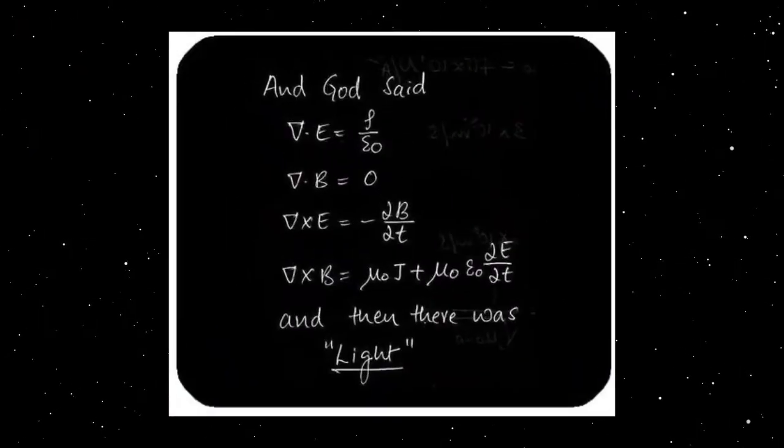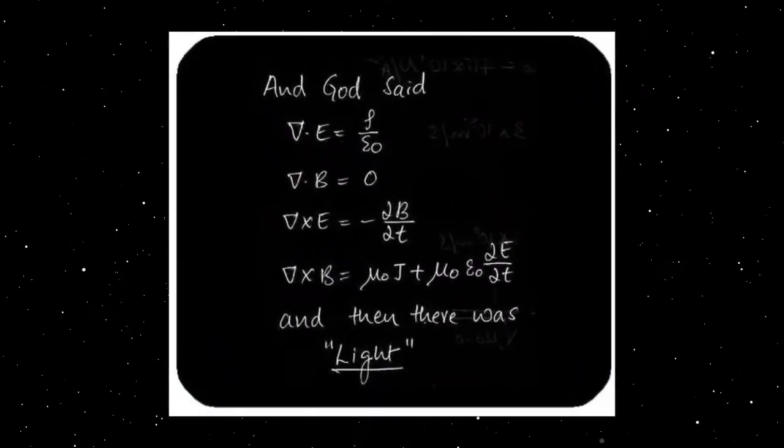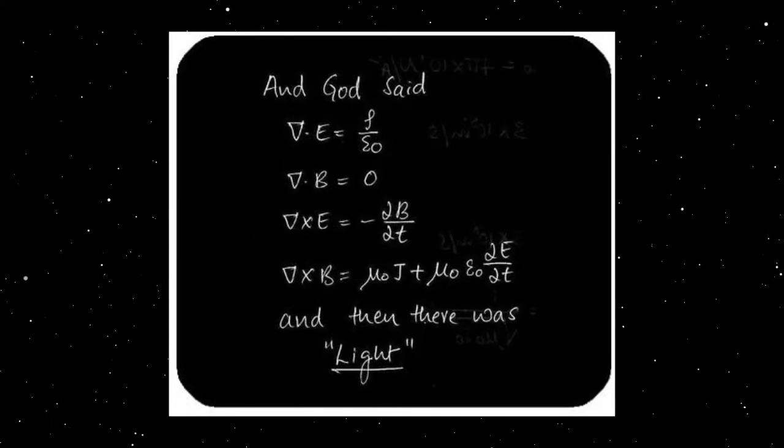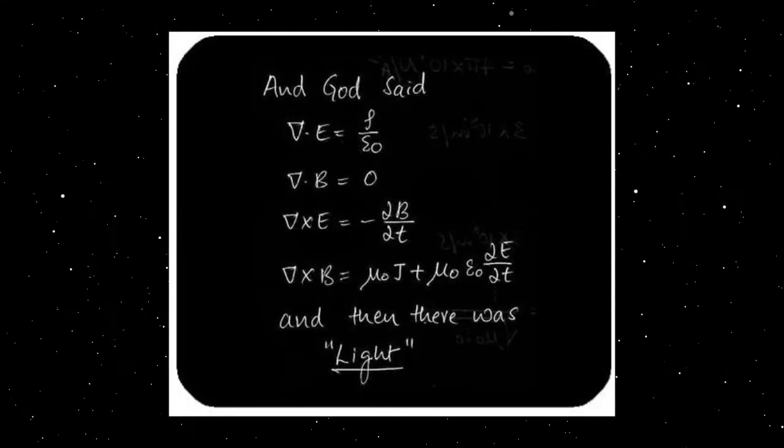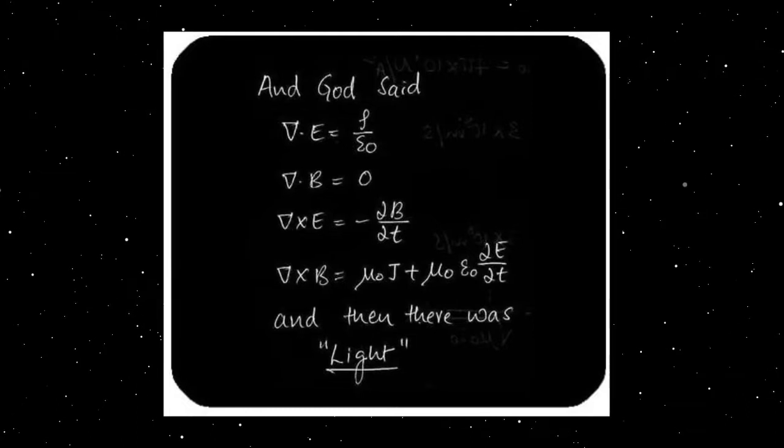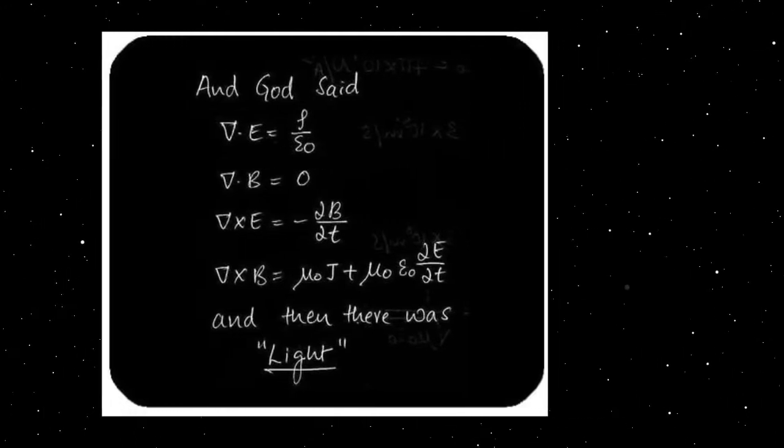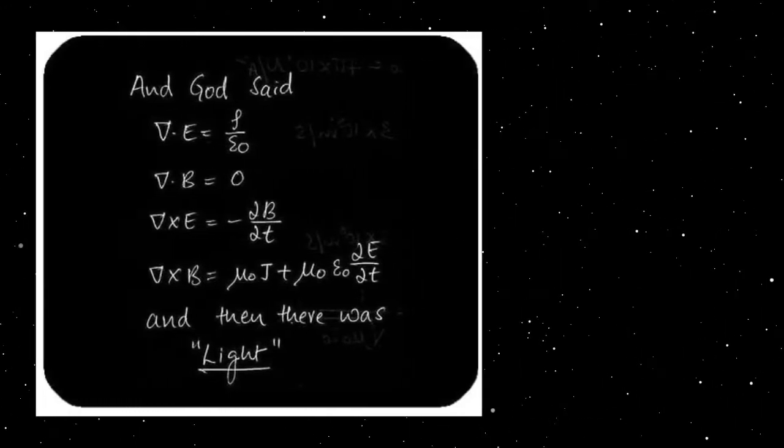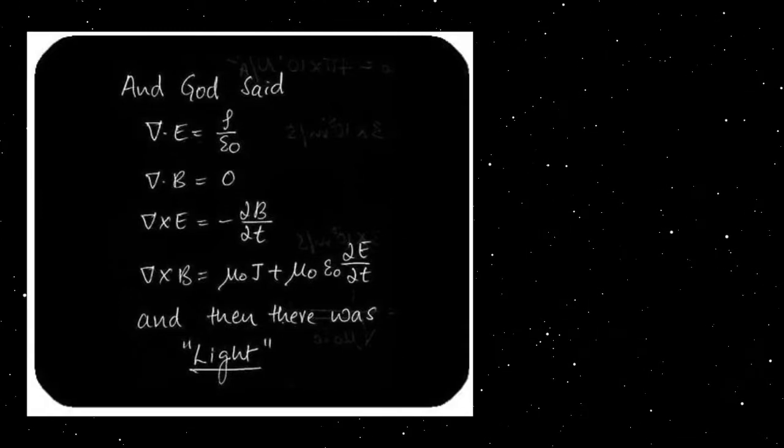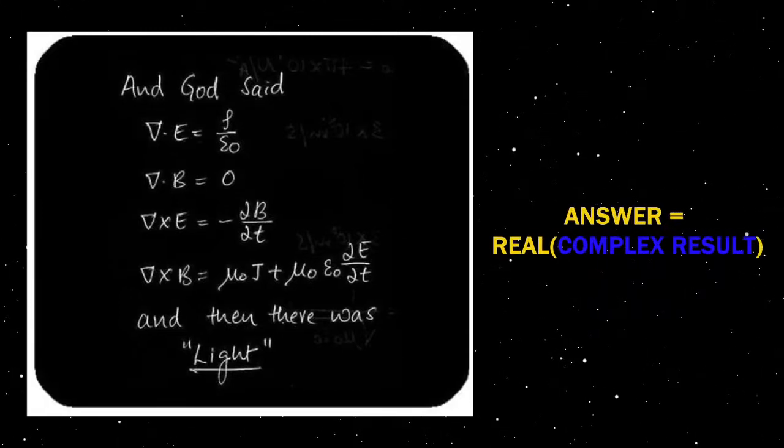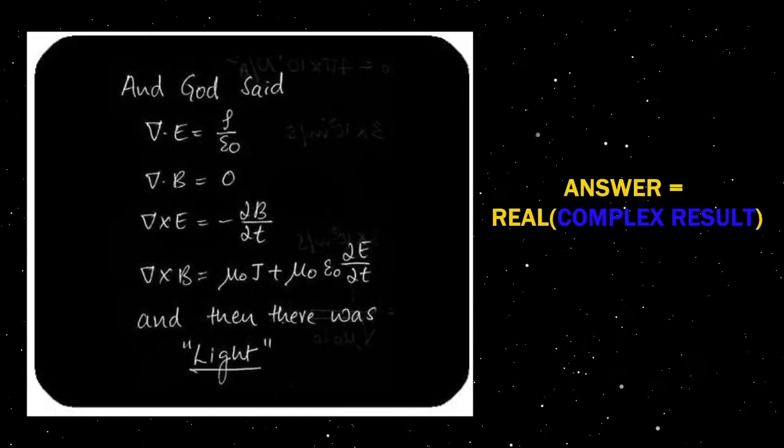Maxwell equations don't have an imaginary unit i lurking around. In electromagnetism, we can use the imaginary exponential functions to easily operate with sinusoidal functions, without the need of constantly invoking cumbersome trigonometric identities. But in the end, we only take the real part of the final complex result.